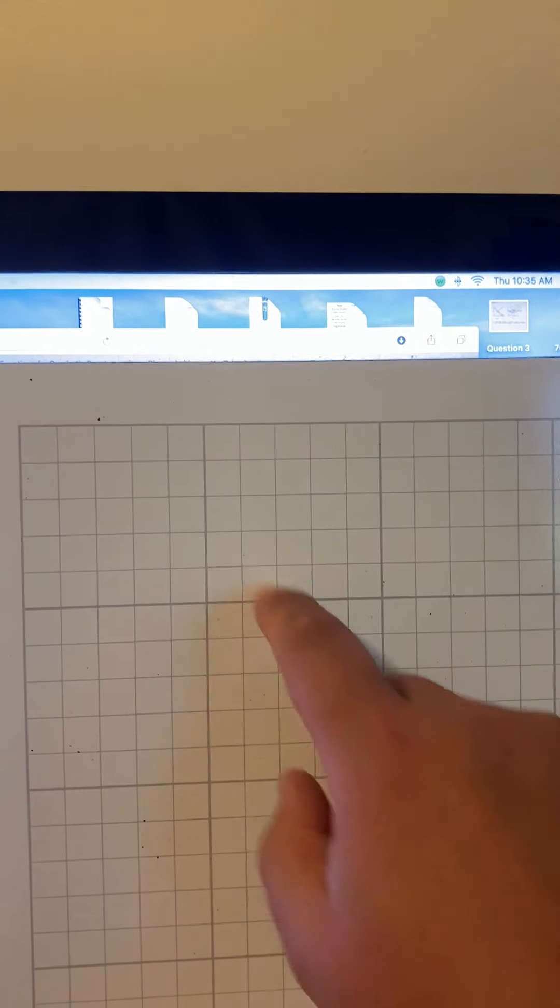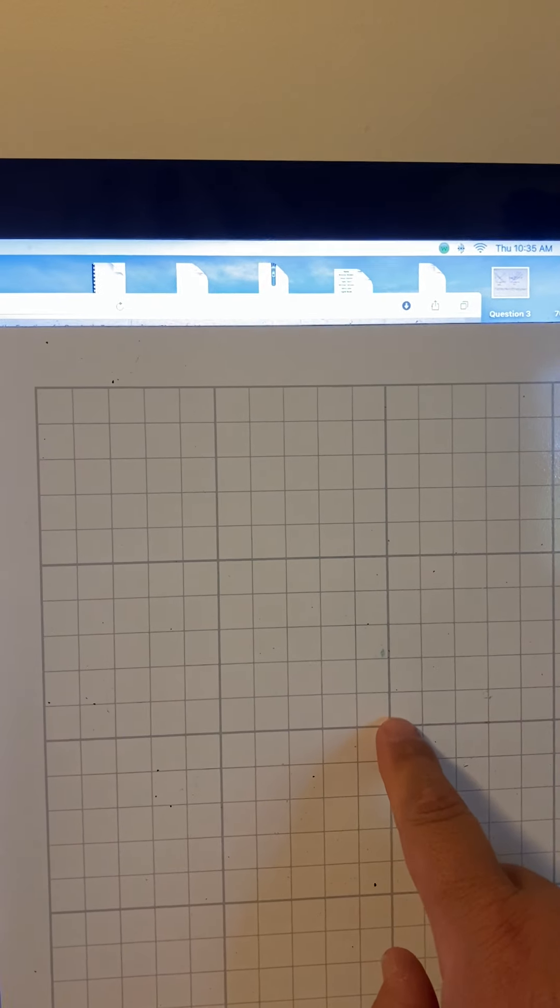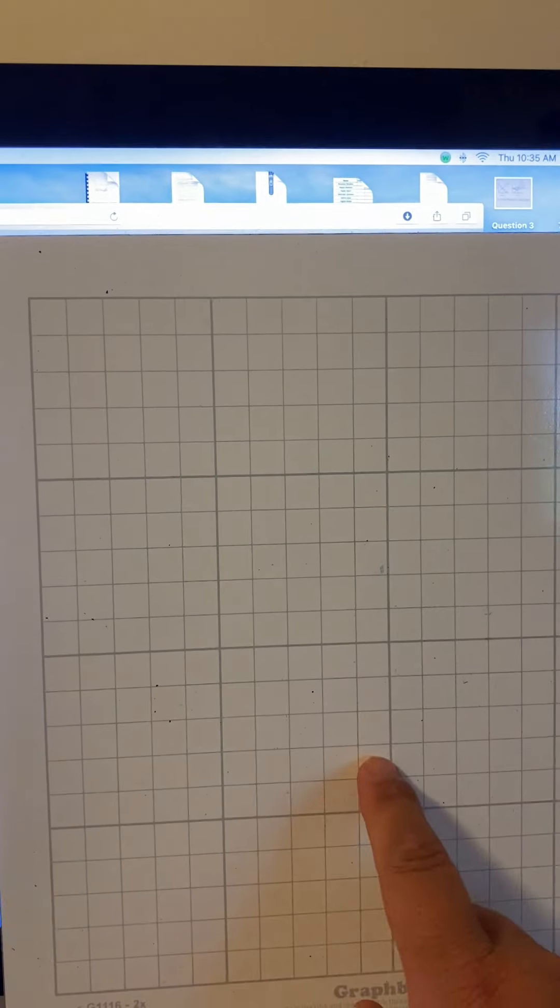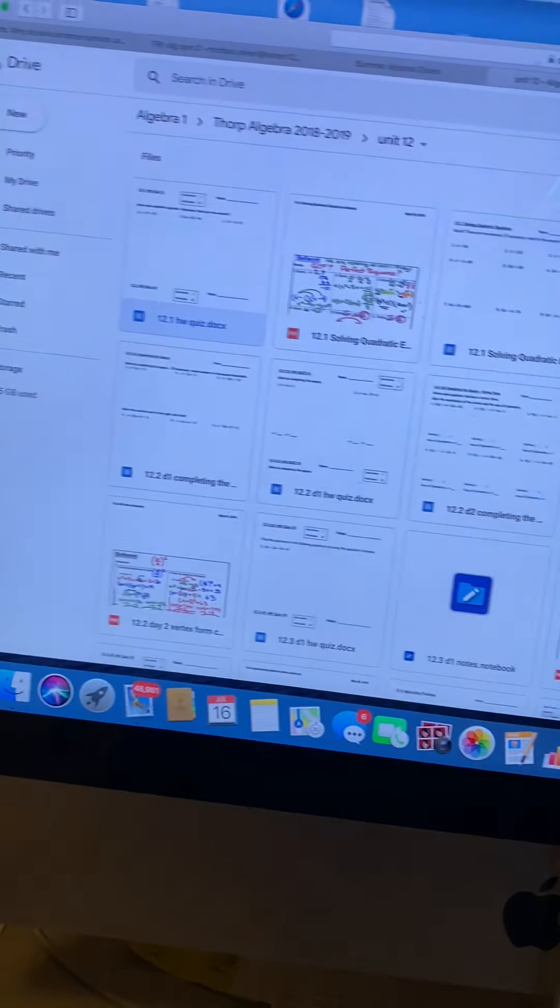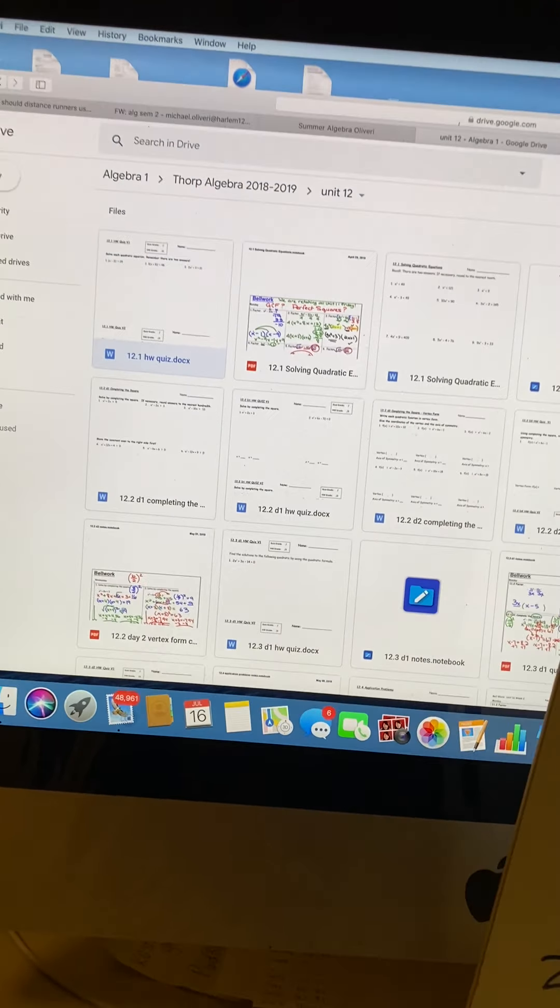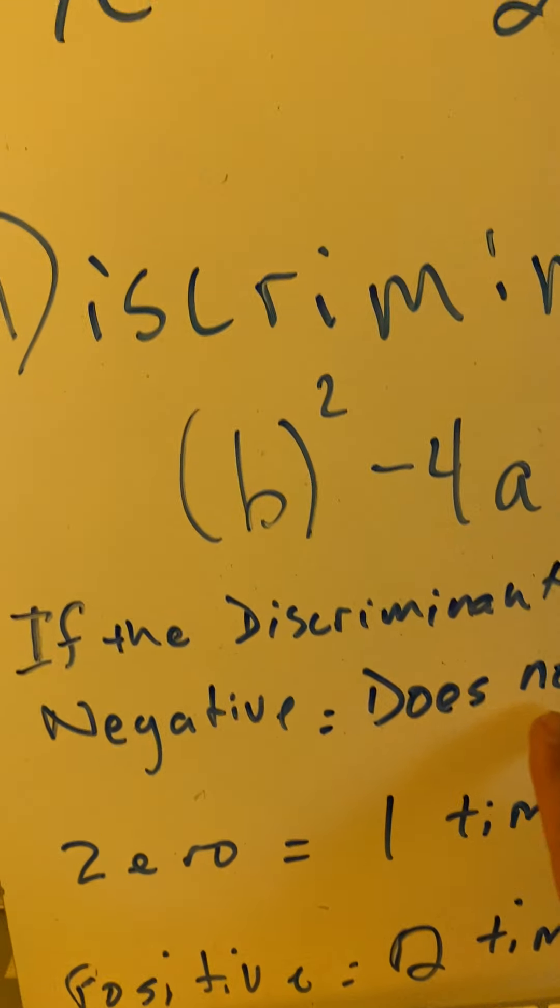Let me give you an example on the drawing right here. That means like the vertex is here and it opens upwards. It doesn't open towards the x-axis. Or it's below and it opens downwards. It doesn't open toward the x-axis. That's if the discriminant is negative, it does not cross the x-axis.